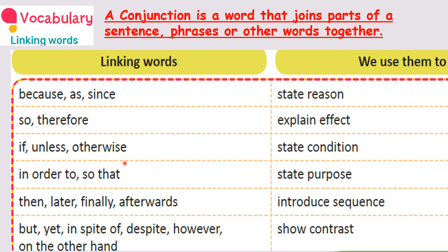For example: 'If you work hard, you will attain success.' You are giving a condition — work hard, that is the condition. 'Unless you work hard, you will never attain success.' Here also you give a condition. 'You have to work hard; otherwise, you will not attain success.'